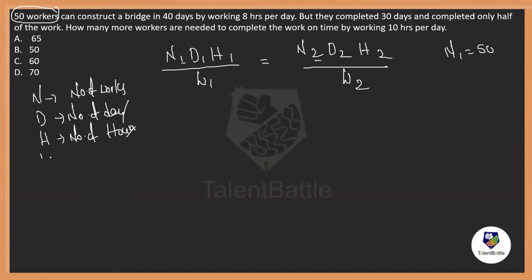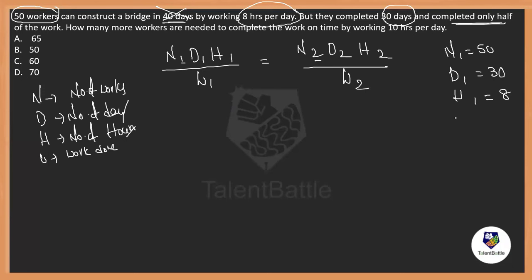In the first case, 50 workers are there and they should complete the work in 40 days, but they worked for only 30 days and completed only half of the work. So D1 = 30, H1 = 8 hours per day, and W1 = half of the total work.